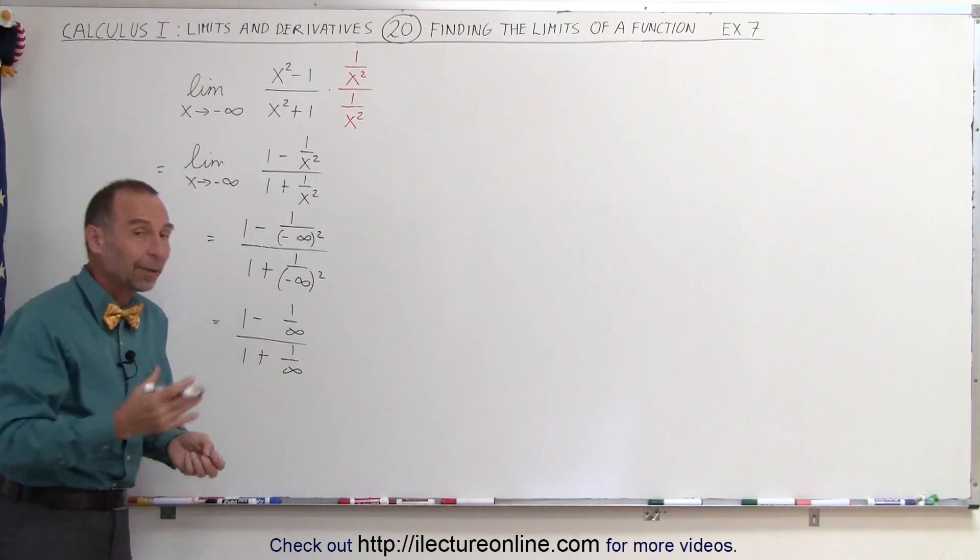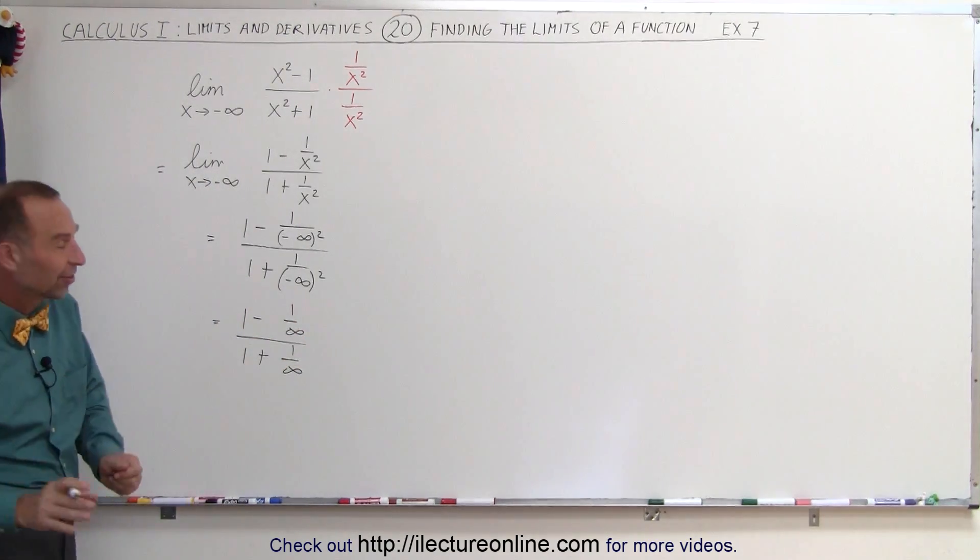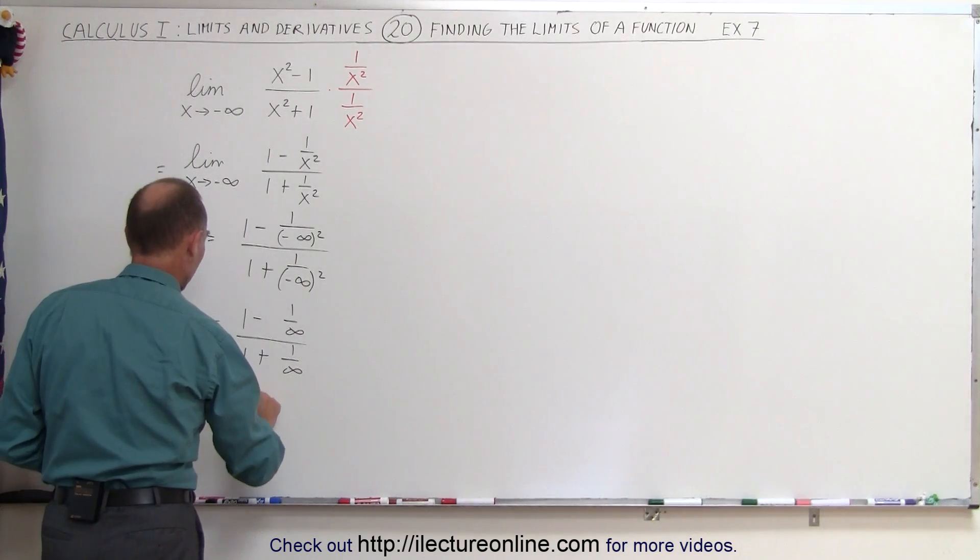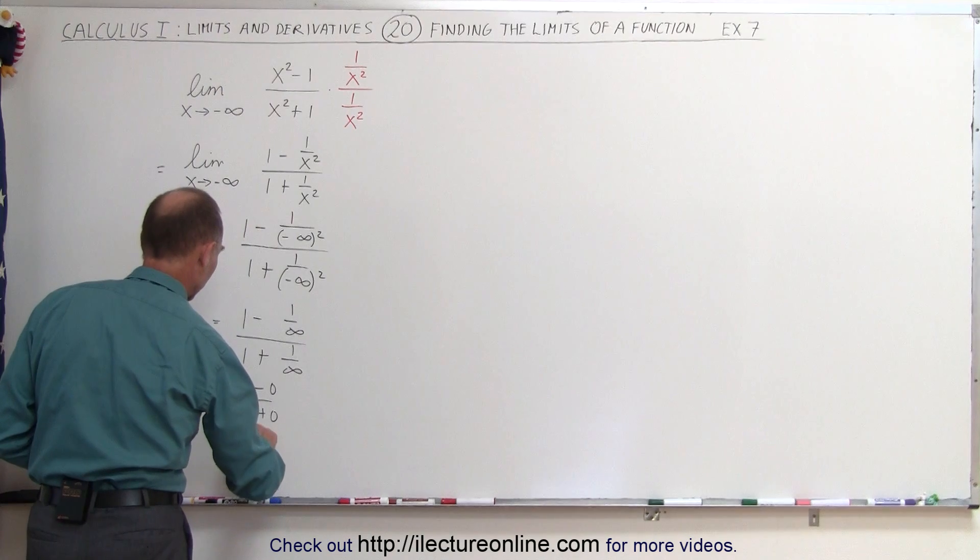And of course, any number divided by infinity, no matter how large the numerator is, when you divide by infinity, you get 0. So therefore, this is equal to 1 minus 0 over 1 plus 0. So essentially, this is equal to 1.